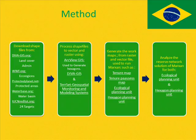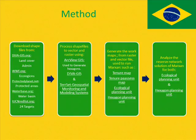Once all the files were converted to vector and raster, we could then generate the work maps used to run Marxan. These maps included the tenure map, the tenure passes map, the ecological planning unit, and the hexagon planning unit. With these work maps, we could then run Marxan and thereafter analyse the reserve network solution for both the ecological planning unit and hexagon planning unit.